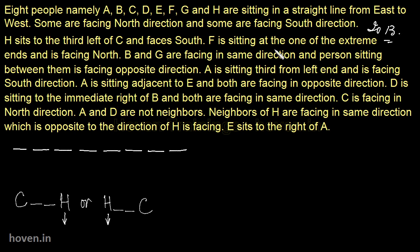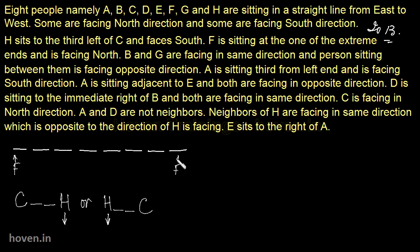F is sitting at one of the extreme ends and is facing north. This is also given concretely, but we don't know whether he is on the left side or right side. So as a rough note, let us mark F below the arrangement with a small upward arrow since he is facing north. F could be in either of the two extreme places; we have written it below and will revise it as we pass.